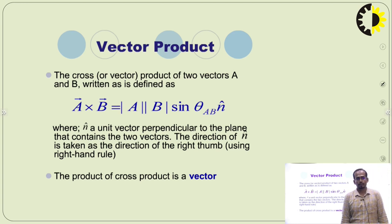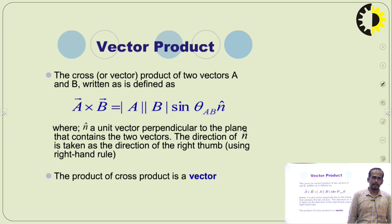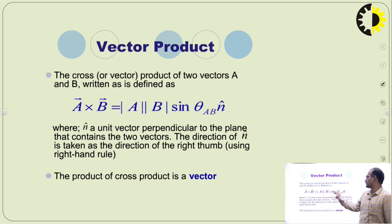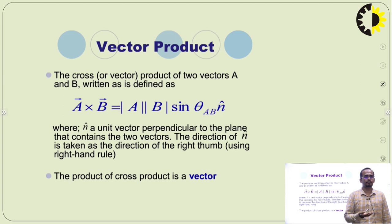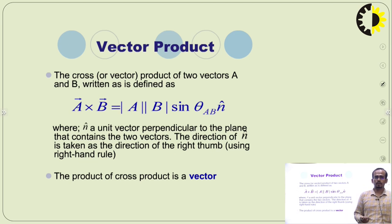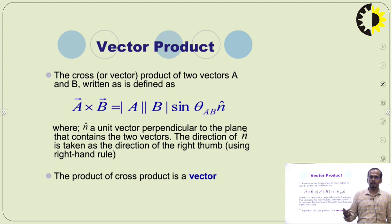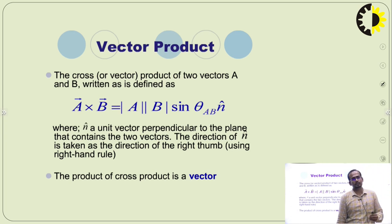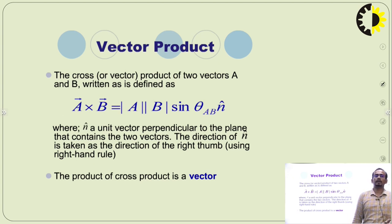What is vector product? The vector product is also known as the cross product. The cross product of two vectors A and B is written as A×B equals mod A times mod B times sin θ_AB times n-cap, where n-cap is a unit vector perpendicular to the plane that contains the two vectors. The direction of n-cap is determined by the right-hand thumb rule. The cross product is always a vector, while the dot product of two vectors is always a scalar quantity.